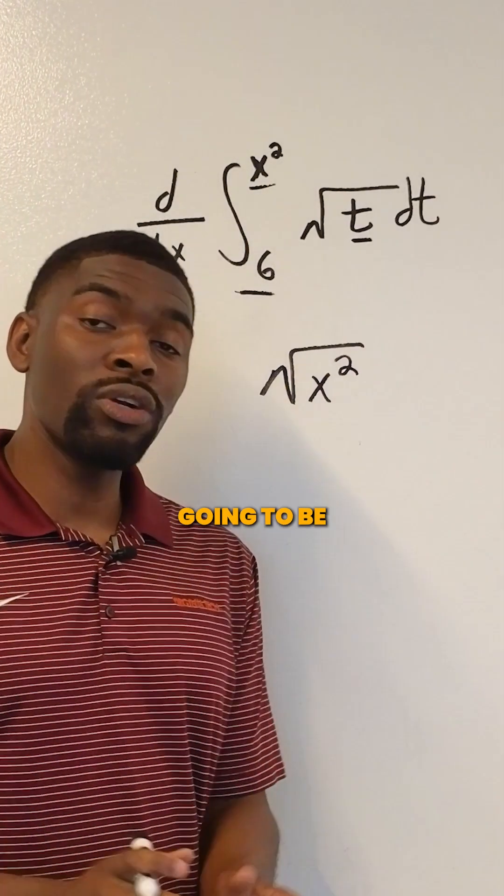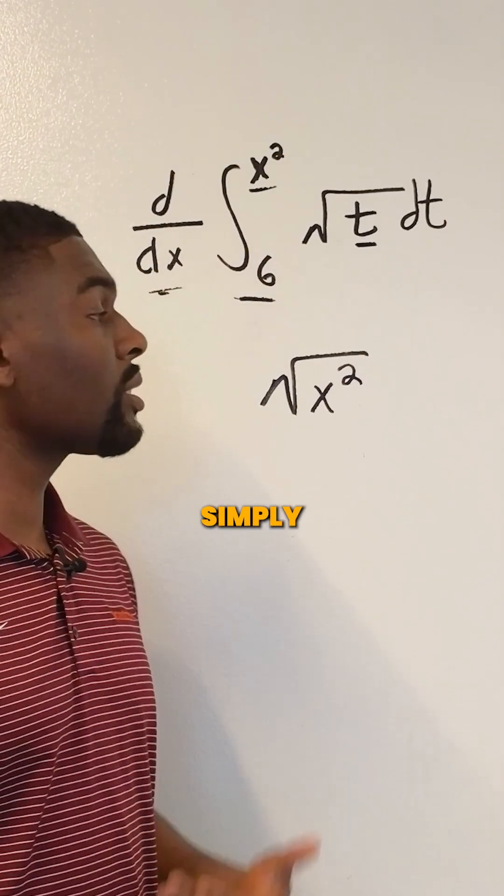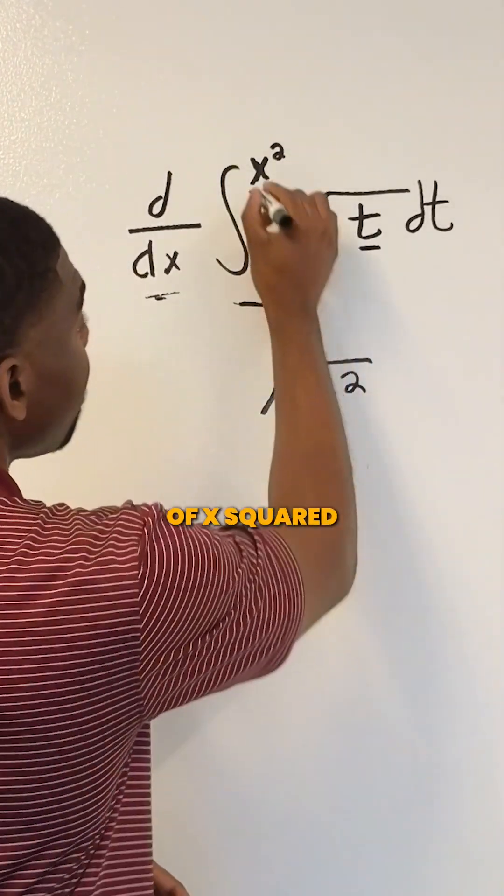When we do this, this is not going to be the end because we're going to multiply by the derivative of x squared.